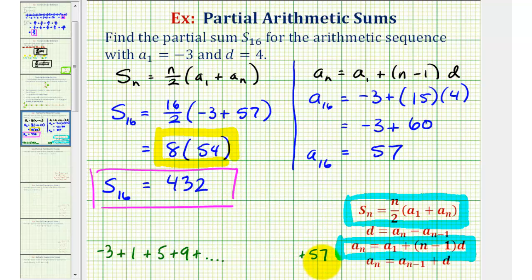Which means the term before that would have to be four less, or 53. The term before that would be four less, or 49, and so on.